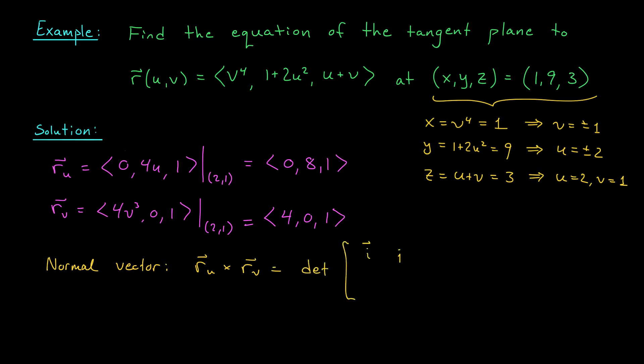Our normal vector is ru cross rv, which is the determinant of this three by three matrix. i, j, k, go in the top row. Then we include the vector ru, zero, eight, one. And then the vector rv, four, zero, one. I'm not going to work through all the details here, but I'll leave it to you to check that you should get 8i plus 4j minus 32k. That's our normal vector.